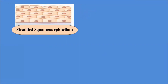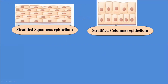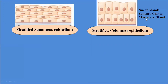Stratified columnar epithelium consists of columnar — rectangular — type cells arranged in multiple layers. They provide the lining and covering to glands, and are mostly involved in the formation of glands such as sweat glands, salivary glands, and mammary glands. This type of epithelium is basically involved in the process of secretion through these glands.